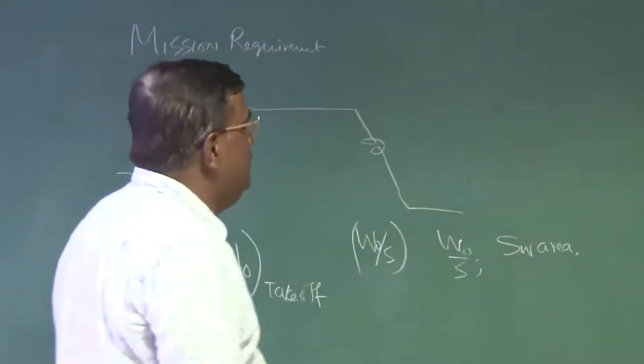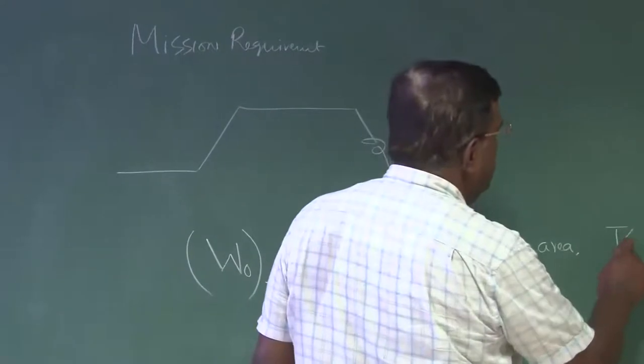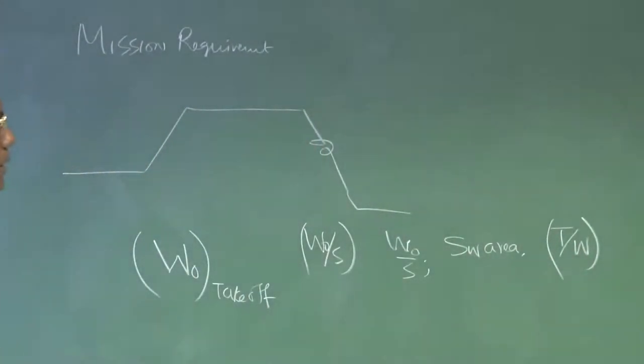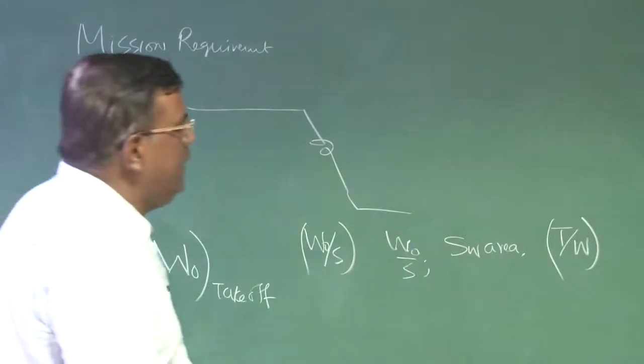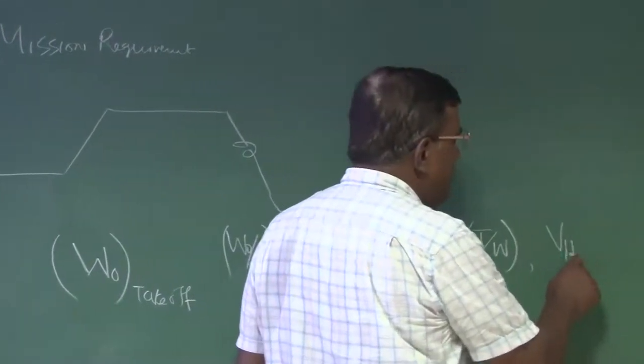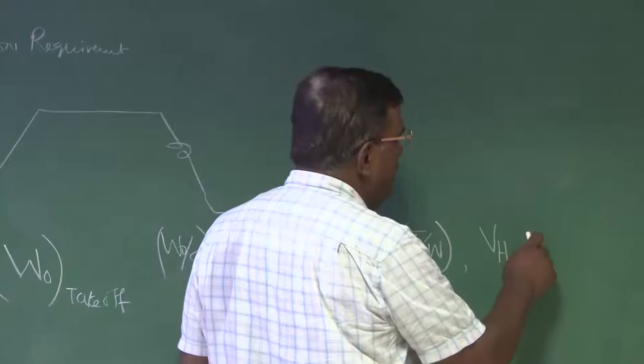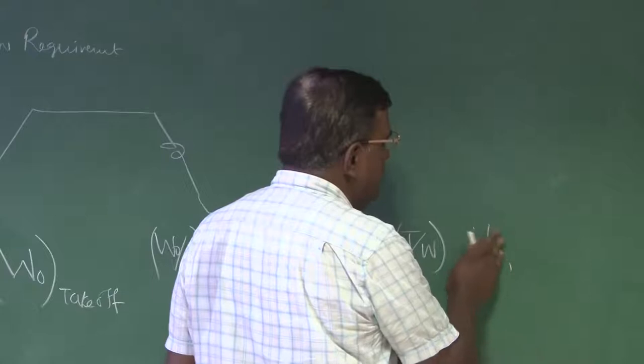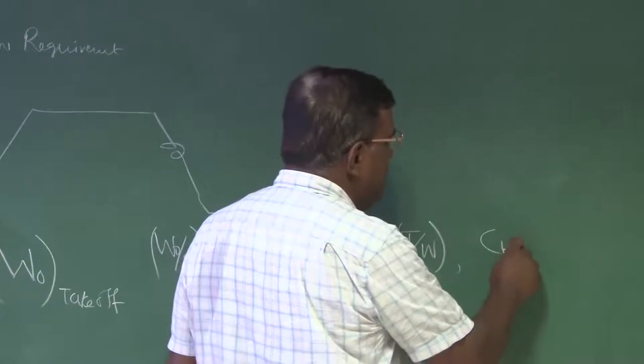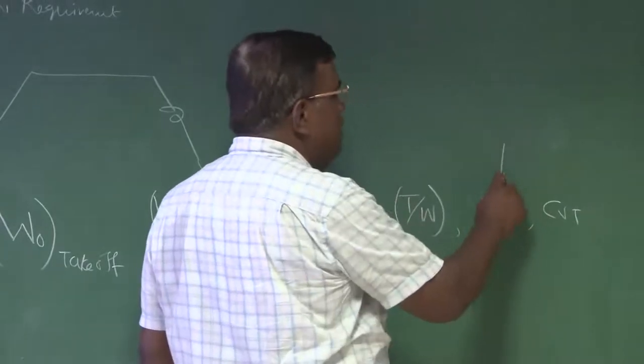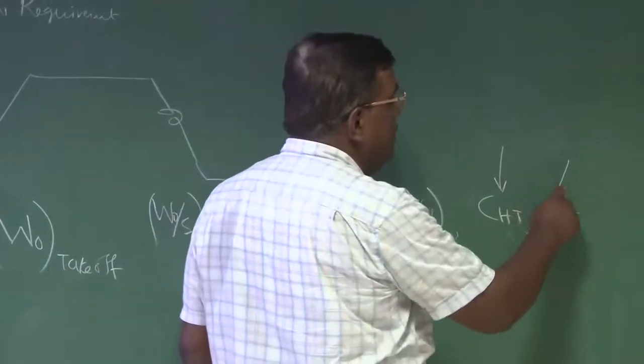We have also got the idea about what is the t by w or thrust loading required for the conceptual airplane. And after that, we try to understand how much tail volume ratio is required. In notation, we might have written CHT and CVT, the tail volume ratio for horizontal tail and tail volume ratio for vertical tail.